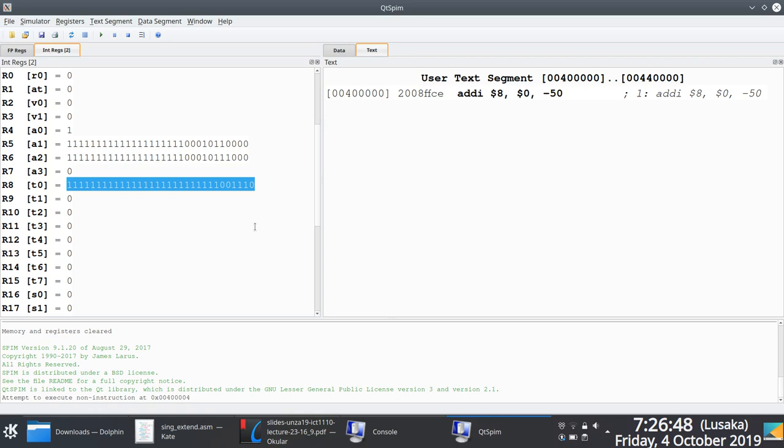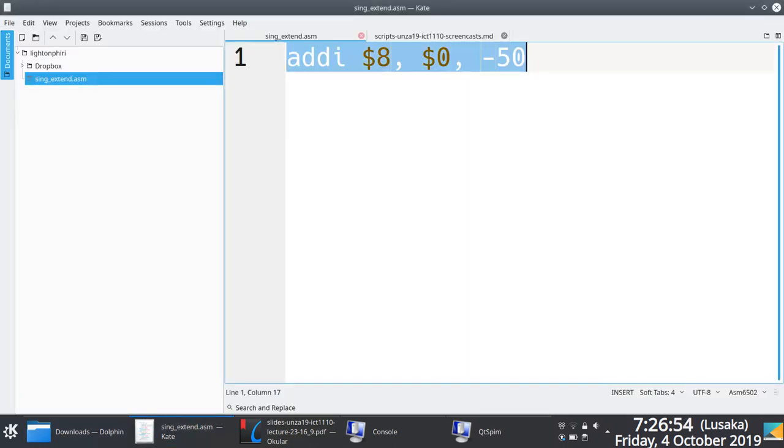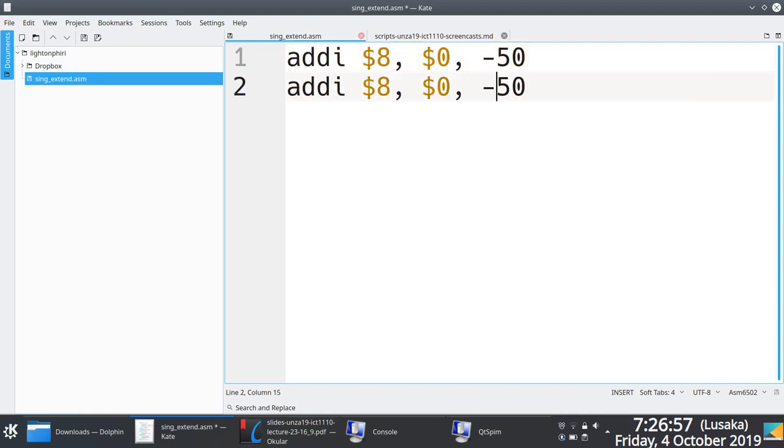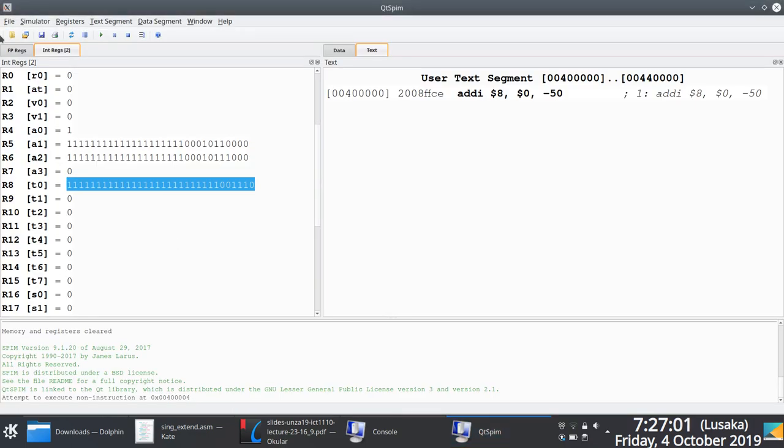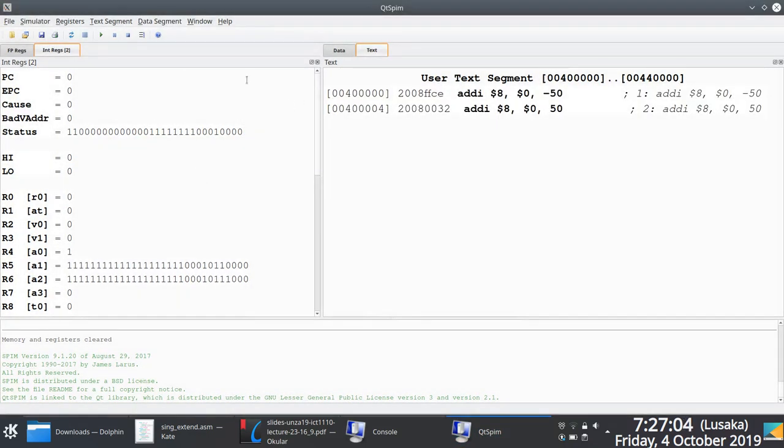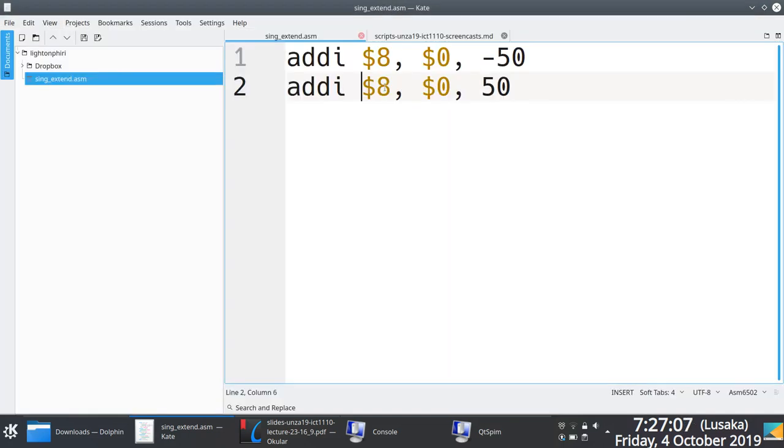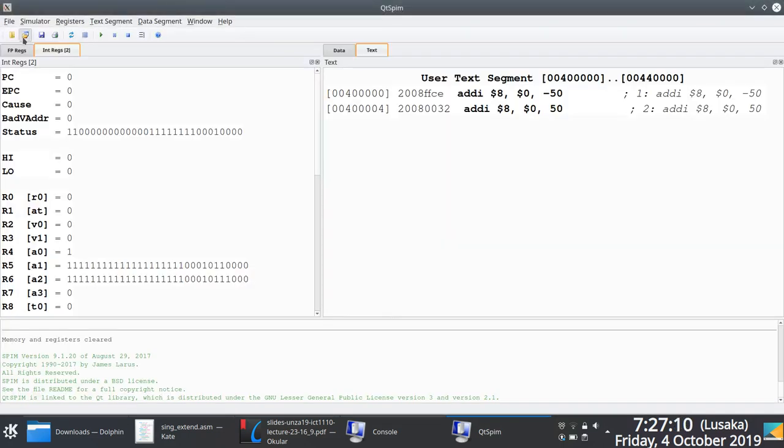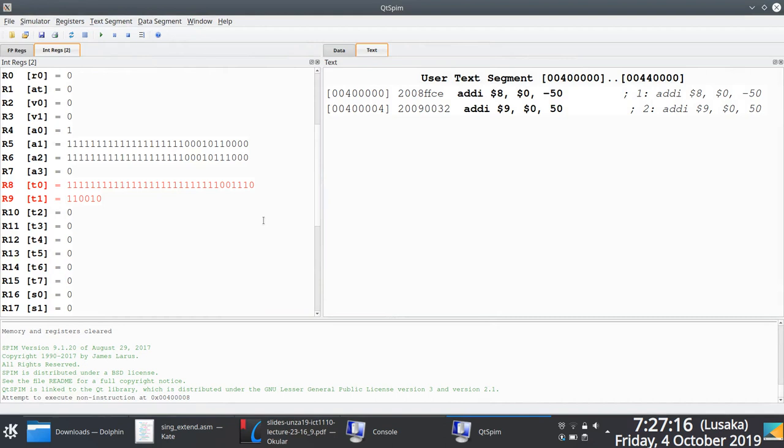This can be tricky because when dealing with integer values, if you include positive 50, you will not see all the 32 bits because of how QTSPIM is implemented. Don't be misled when you're trying these things out. The reason is simple: the leading zeros are more or less irrelevant.